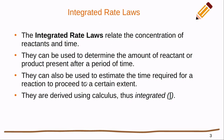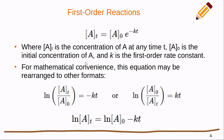They're called integrated rate laws because they're derived using calculus and are integrated — that's this little squiggly symbol for those familiar with calculus. Let's start with our first order reaction. It's probably the trickier one because it involves an exponential term with a base of e. We have the concentration at any given time, the initial concentration we started with, and our reaction constant and time, with a negative sign.